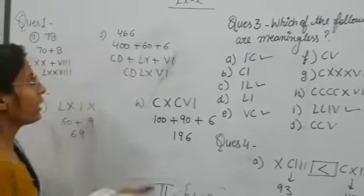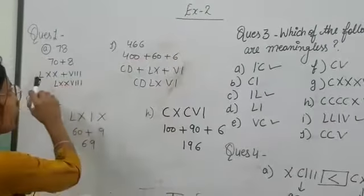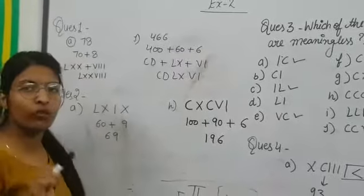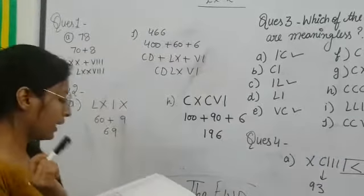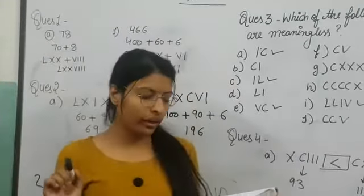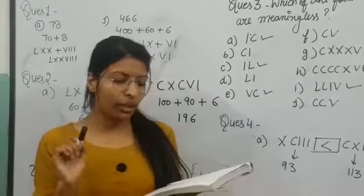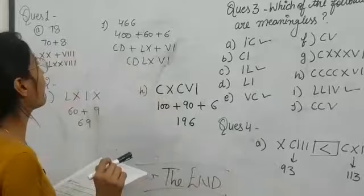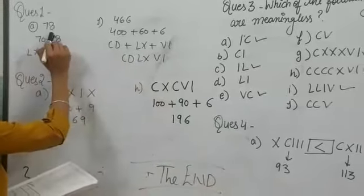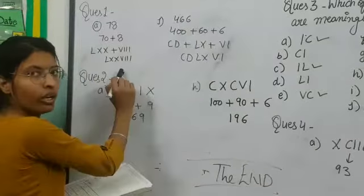Good morning everyone. Here is exercise 2. Question number 1, 2, 3, 4. Question number 1 is: write the Roman numeral for each of the following Hindu Arabic numerals. What do you want to do? You want to change the numbers to Roman numerals.